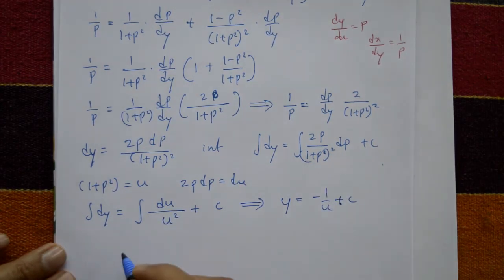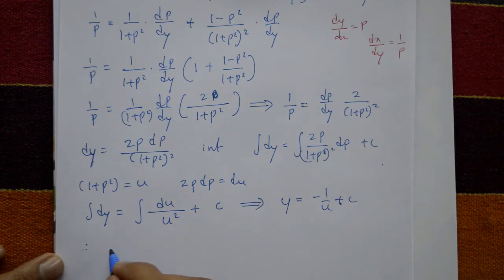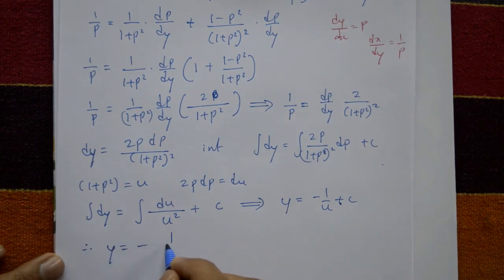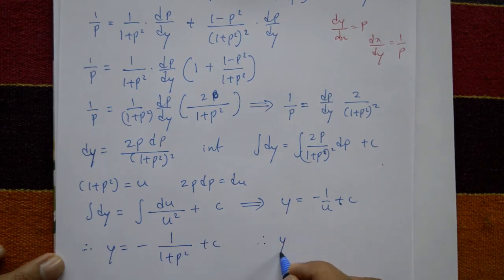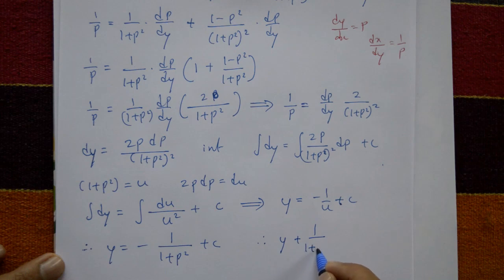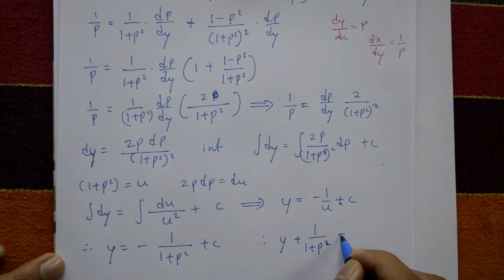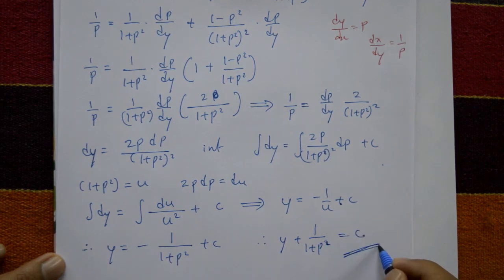Therefore y = -1/(1 + p²) + C. Taking the -1/(1 + p²) to the left-hand side: y + 1/(1 + p²) = C. This is the required general solution.